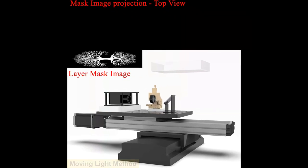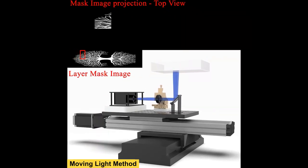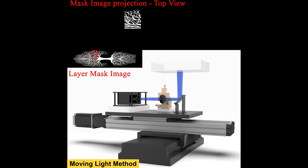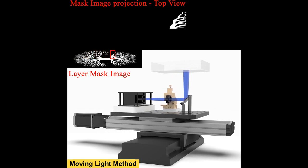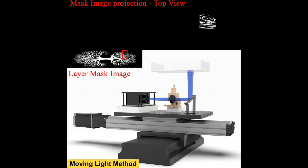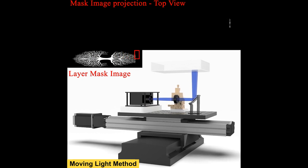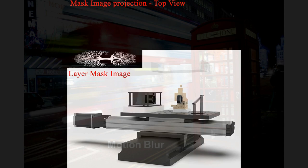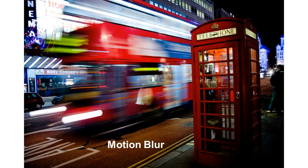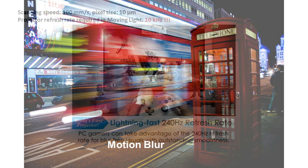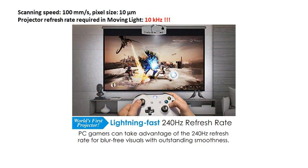Later, researchers proposed a moving light approach to increase the fabrication speed. The projection system continuously moves while simultaneously projecting images. The projection system needs to refresh the mask image with every movement of a single pixel distance. Otherwise, the motion blur effect will lead to incorrect curing. The demand for high projector refresh rates, like 10 kHz, challenges most current commercial projectors and limits the printing speed.